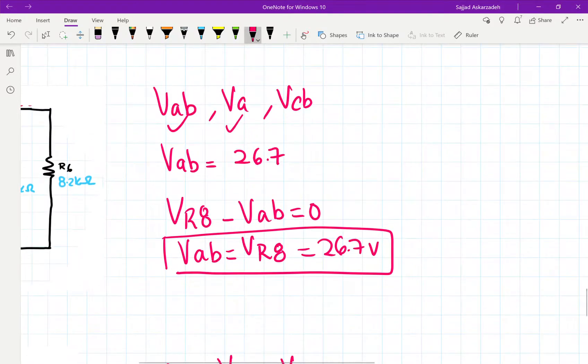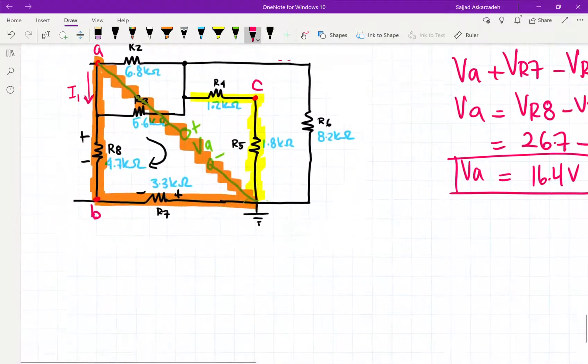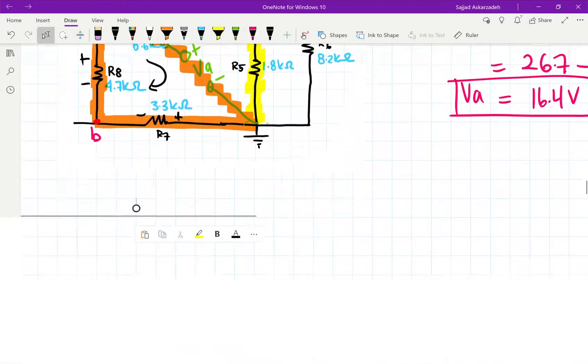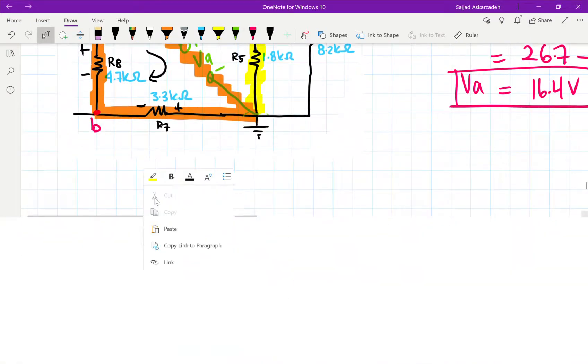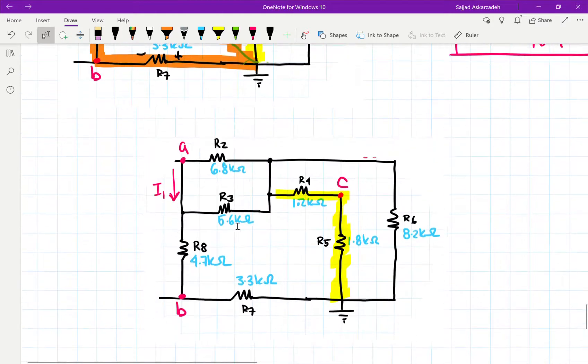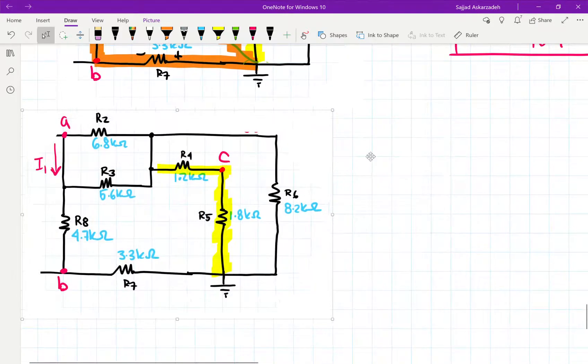Okay. So then we've calculated that. Now the last one is VCB, where we calculate VCB. So I'm going to go ahead and paste the diagram one more time. This time we're finding VCB.